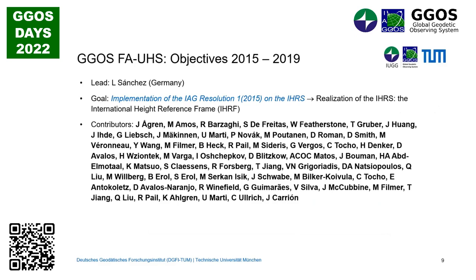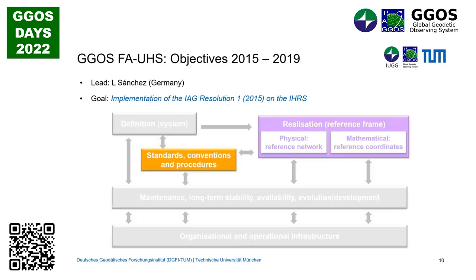For the next term, 2015–2019, we tried to implement this IAG resolution — to discuss what we need for the realization of the system (called the International Height Reference Frame), define what we need, and how we can proceed to make this realization possible. We concentrated particularly on the standards, conventions, procedures we need, and the realization.